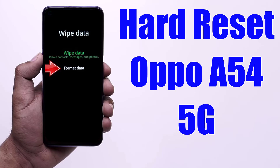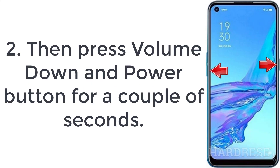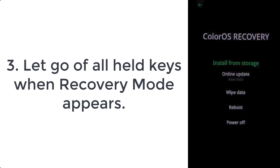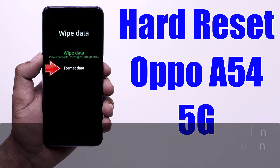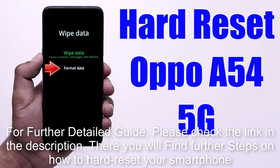How to hard reset Oppo A54 5G. Step 1: turn off your phone by holding the power key for a few moments. Step 2: press the volume down and power button for a couple of seconds. Step 3: let go of all held keys when recovery mode appears. For a further detailed guide, please check the link in the description — there you will find further steps on how to hard reset your smartphone.